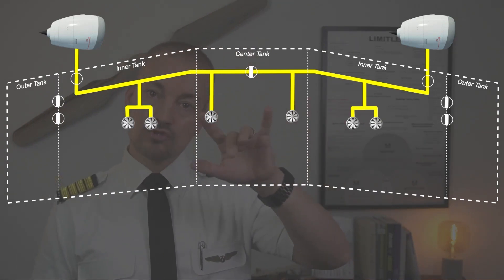The center tank has two electrically driven booster pumps. One feeds the right side and one feeds the left side.